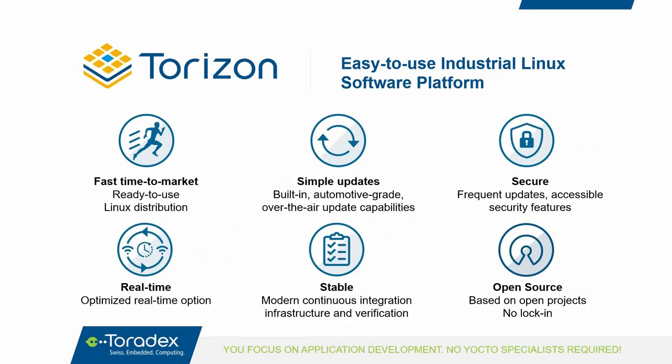The Toradex software that runs on the module is called Torizon — it's a Linux distribution. The main goals are: fast time to market with a ready-to-use out-of-the-box experience, simple OTA updates (where Foundries.io comes in), security, a real-time option using the RT patch, stable releases via continuous integration, and open-source technology so you can modify it for your own project.